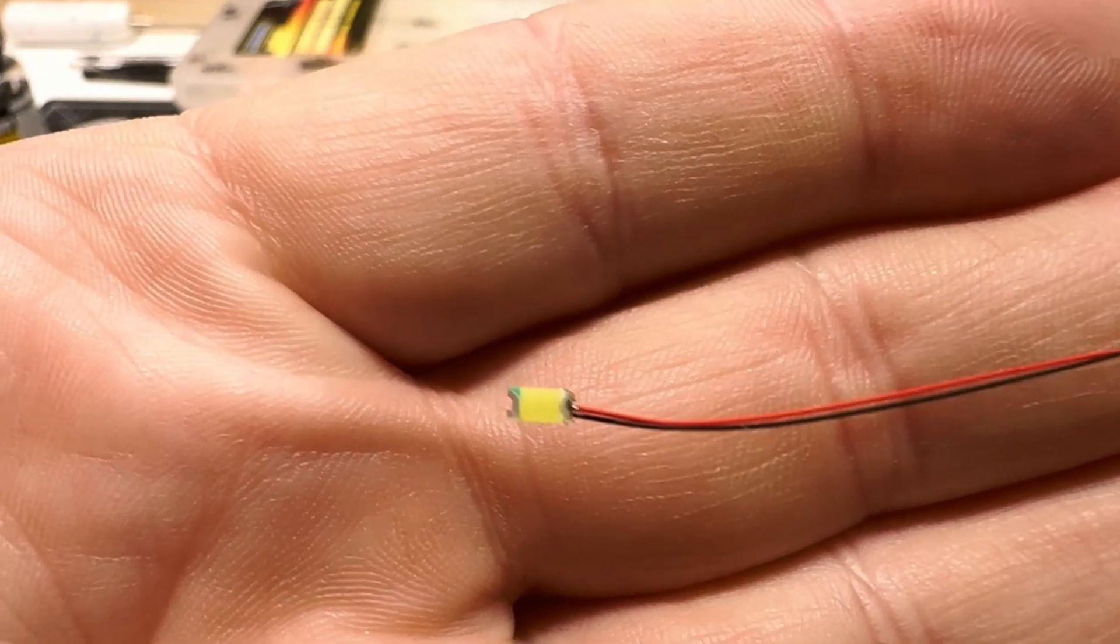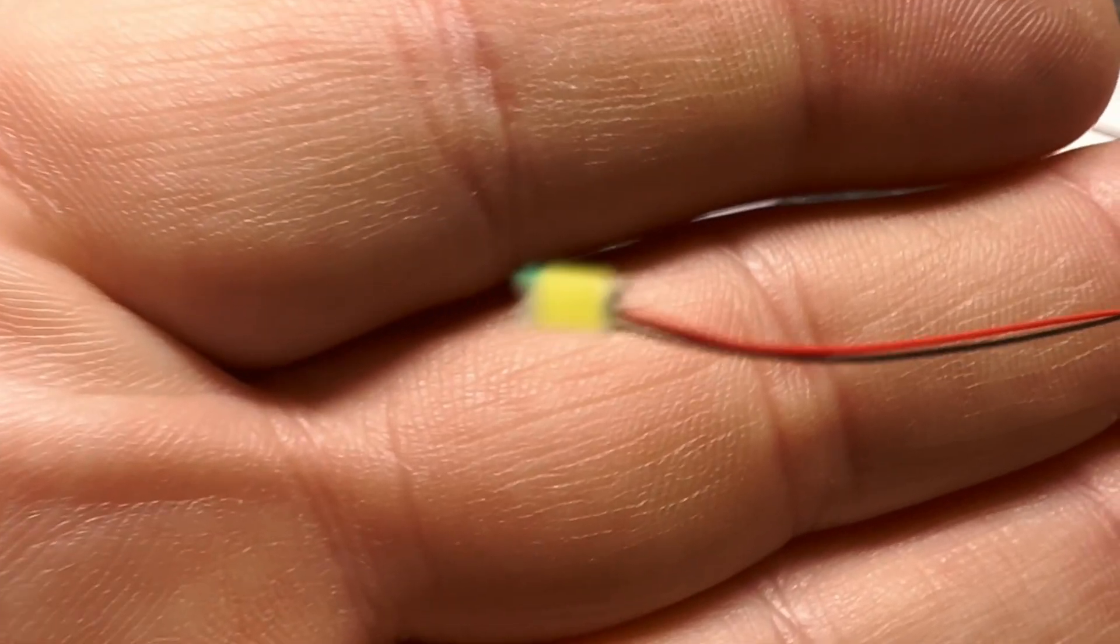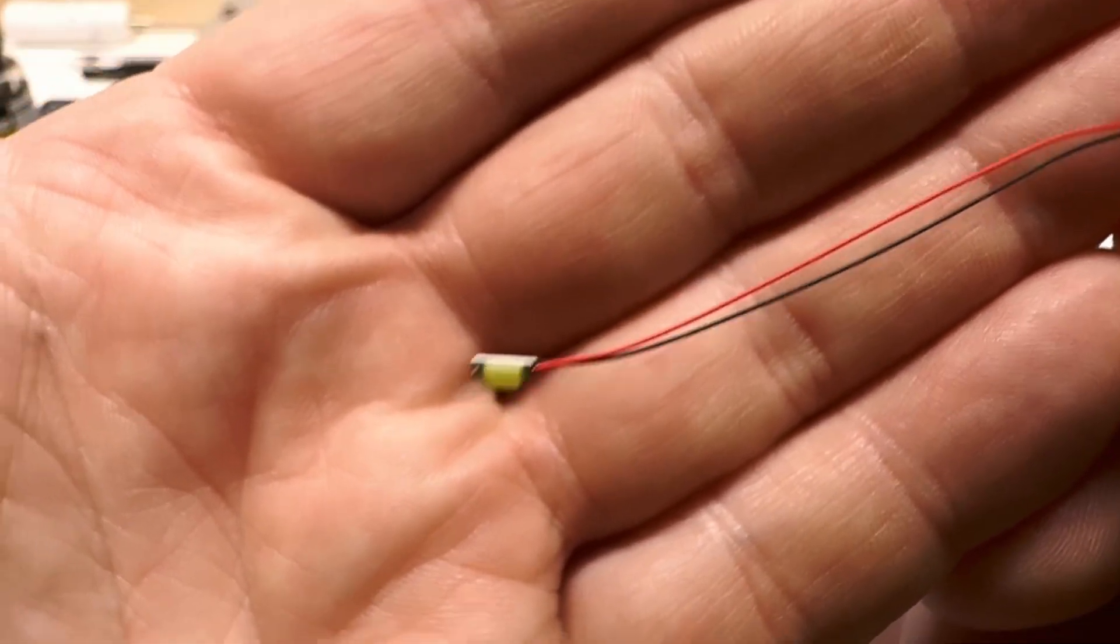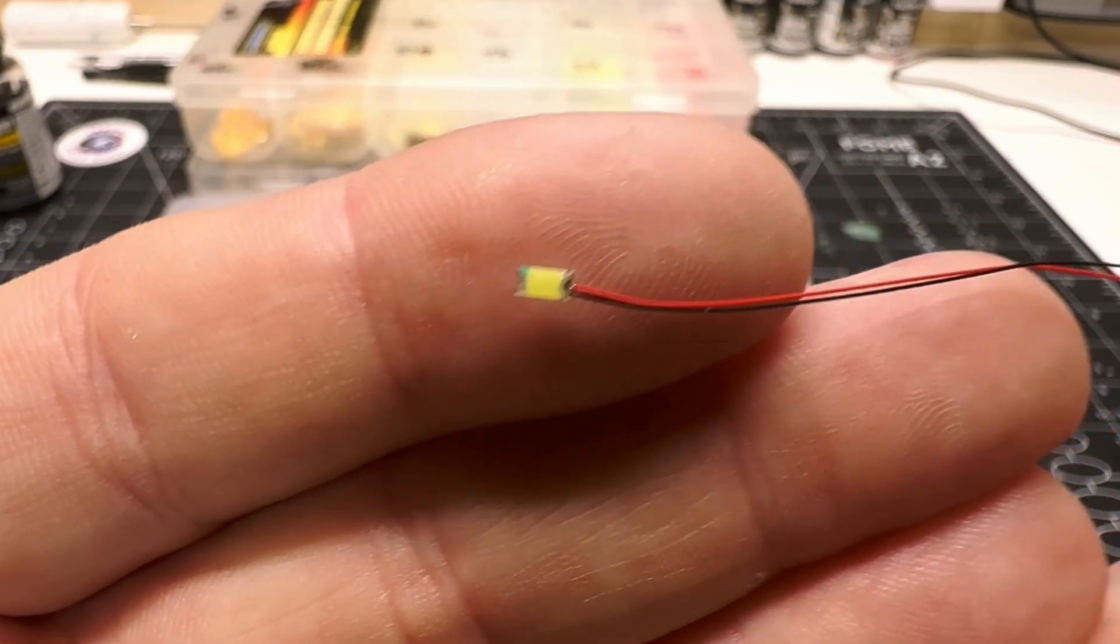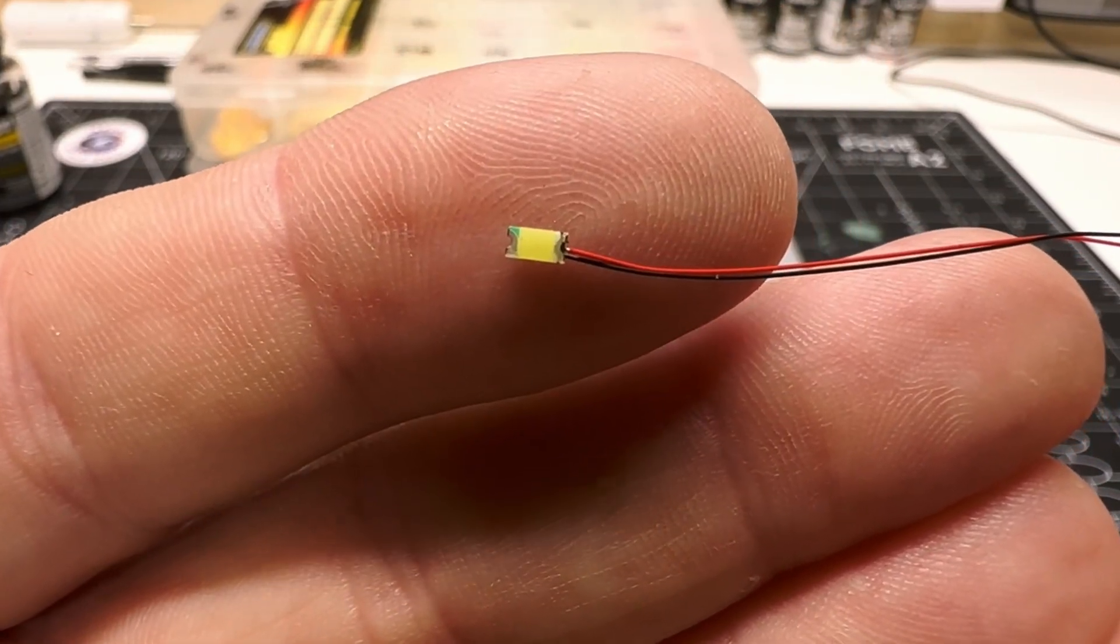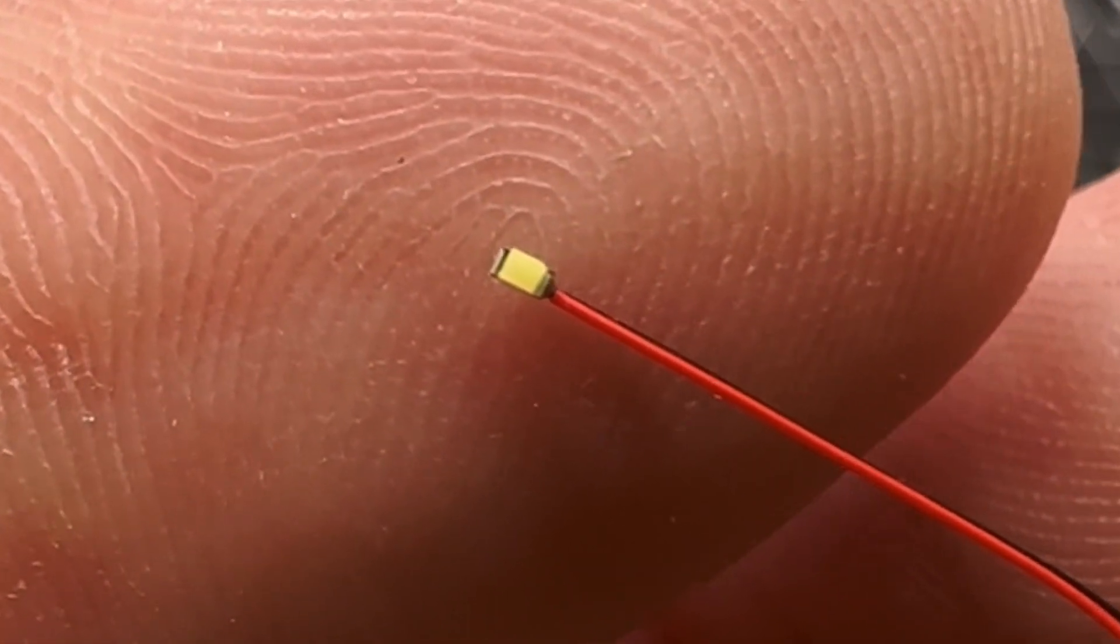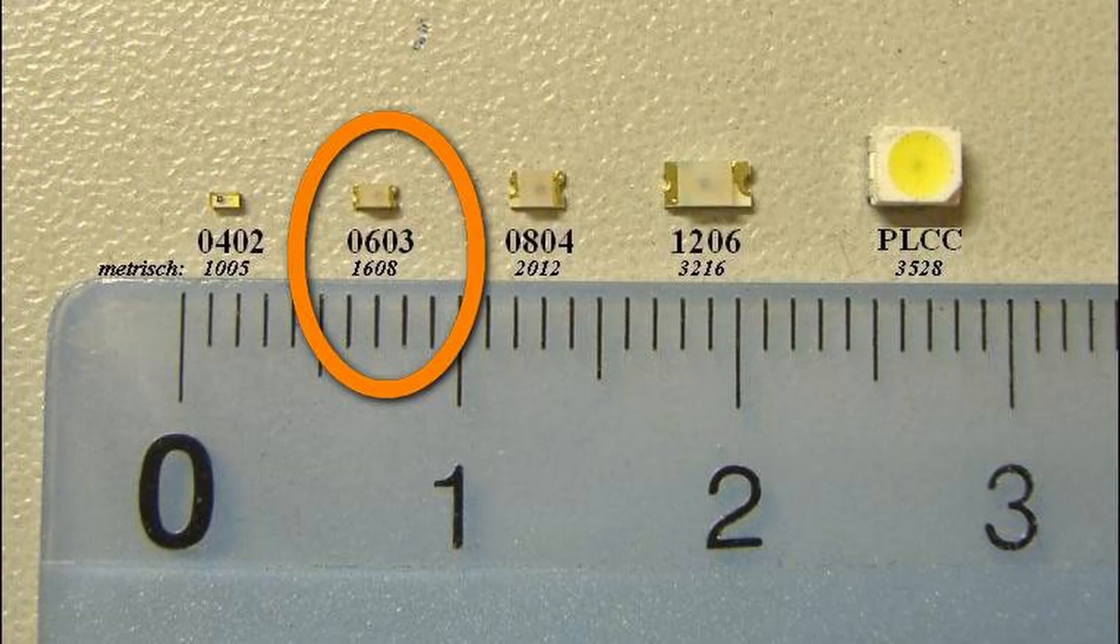Then we have SMD LEDs. Surface mount devices. These are much smaller than standard LEDs and are often used when space is tight. They come in different size codes like 0402, 0603, 0805, and 1206. Those numbers refer to their dimensions in millimeters. The smaller the number, the smaller the LED. For example, an 0402 is just 0.4 mm by 0.2 mm.